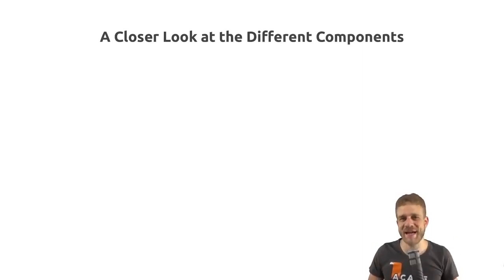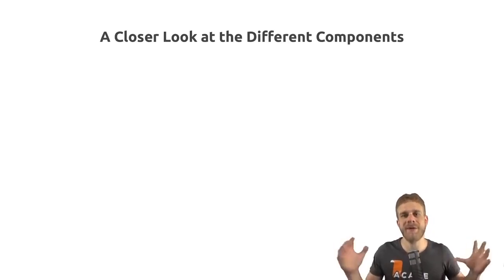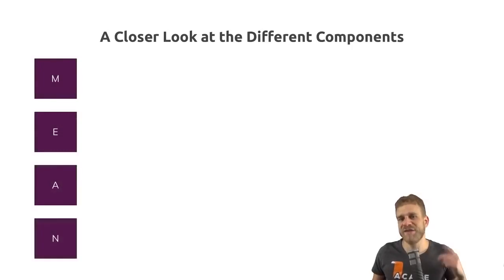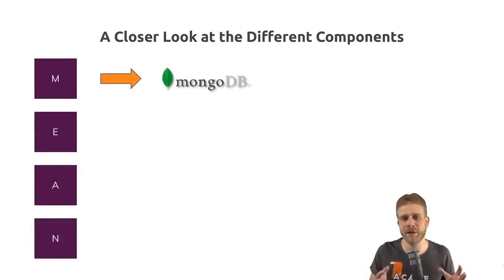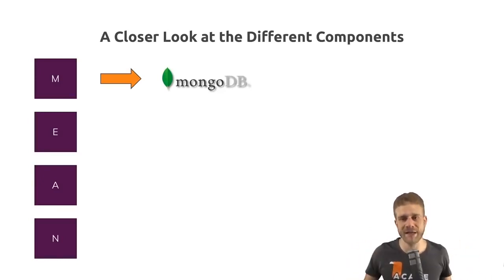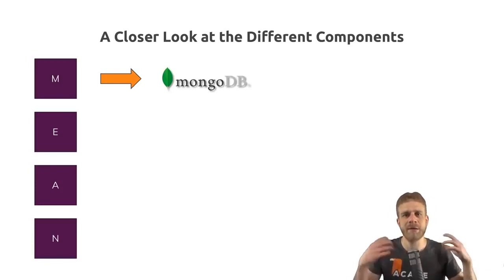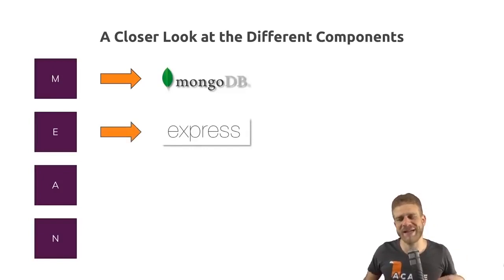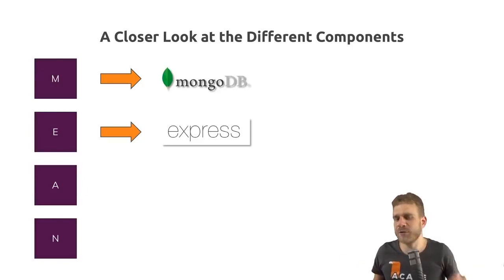So what does MEAN stand for? What are the different components we'll learn about in this course? MEAN comprises a set of four technologies. The M stands for MongoDB — it's the database we'll use to persist data users generate, like user data itself, posts or messages they send. The E stands for Express, and Express.js is hard to understand without the N.